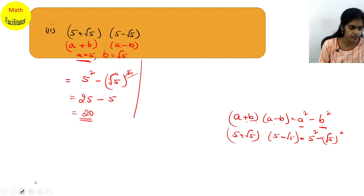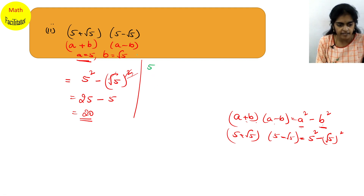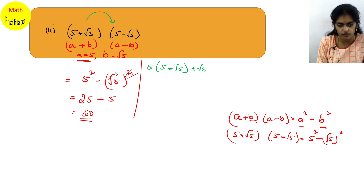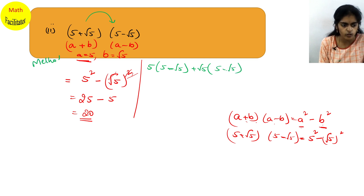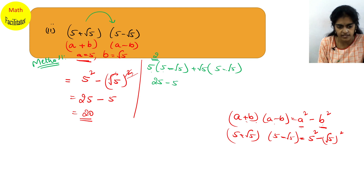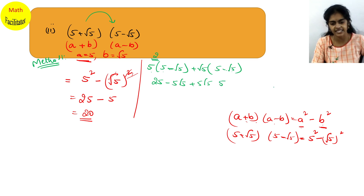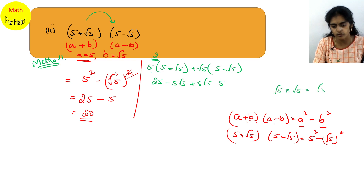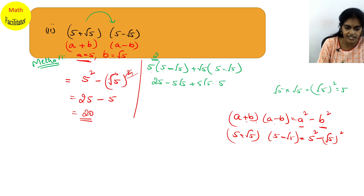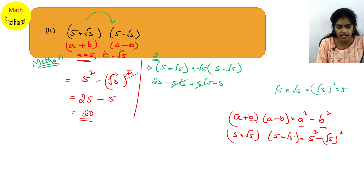Using the alternative method: multiply 5 with (5 - √5) to get 25 - 5√5, then multiply √5 with (5 - √5) to get 5√5 - 5. Adding them: 25 - 5√5 + 5√5 - 5, the ±5√5 cancels, giving 25 - 5 = 20. So instead of this longer calculation, you can happily use the identity directly.